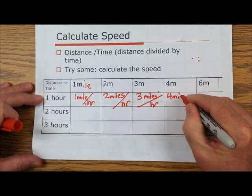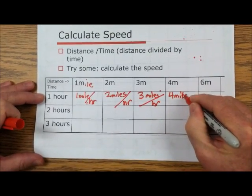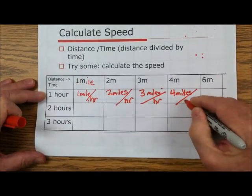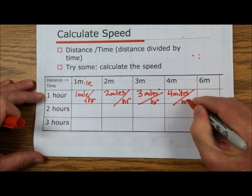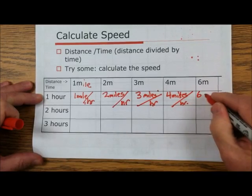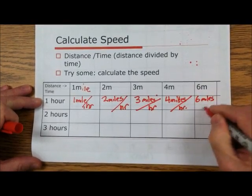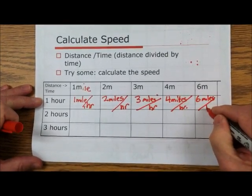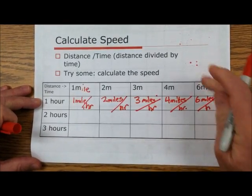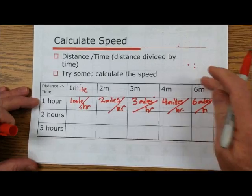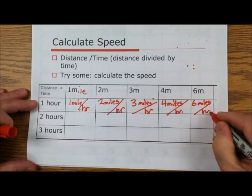Four miles per hour. And of course six miles per hour — it takes an hour, and in an hour we can go six miles.